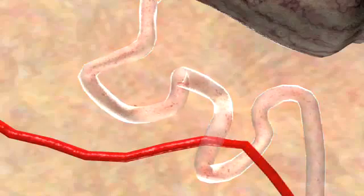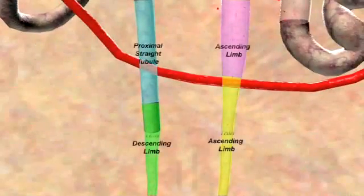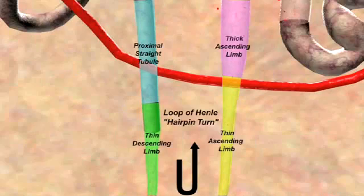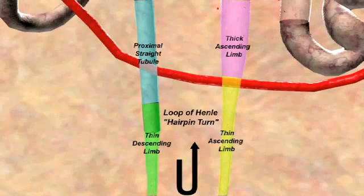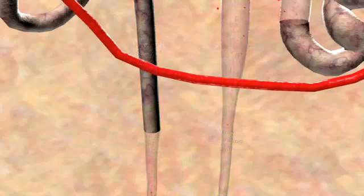The proximal convoluted tubule leads into the loop of Henle, which has a thin descending limb and a thin and thick ascending limb. The thick ascending limb normally reabsorbs about 25% of the filtered sodium, but does not allow water to reabsorb. The loop diuretics act here by blocking sodium-potassium chloride ion cotransporters on the luminal membrane.